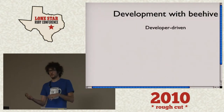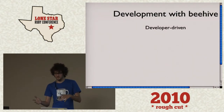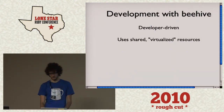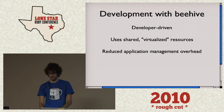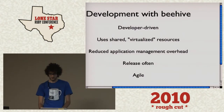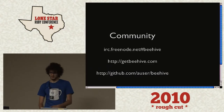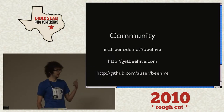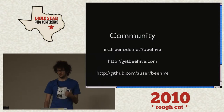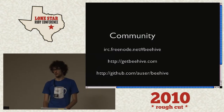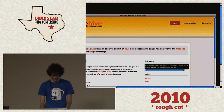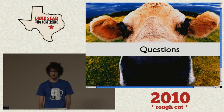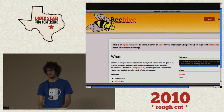So it turns development without Beehive into development with Beehive. Development with Beehive is developer-driven, uses shared virtualized resources, reduces application management overhead, allows you to release pretty much whenever you want. It's agile. There's a growing community already around it — the IRC room is pretty active. And there's the Beehive webpage that's currently up right now.